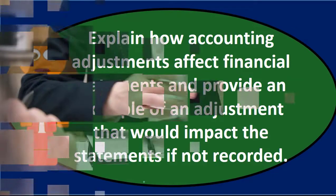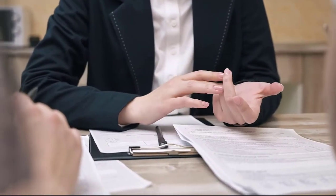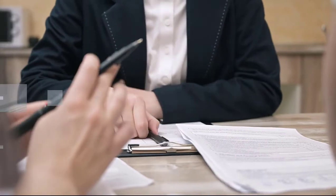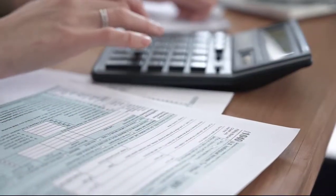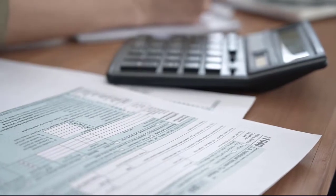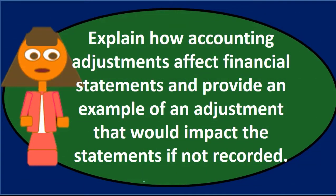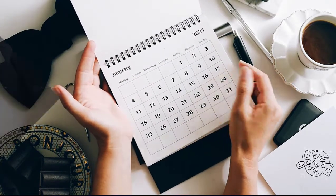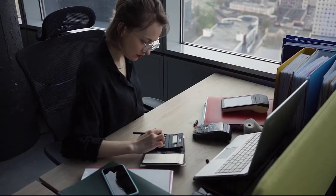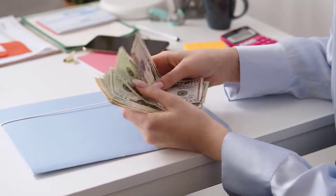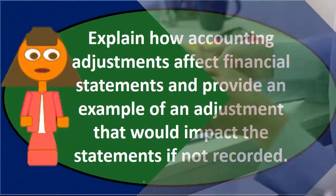The adjusting process helps get all account types to their proper balances. To get more detail into an essay question like this, remember where the adjusting process lines up in the overall accounting cycle. The normal accounting cycle involves entering data including checks, bills, receipts, and invoices — that's the normal data input throughout the accounting period.